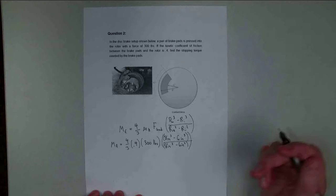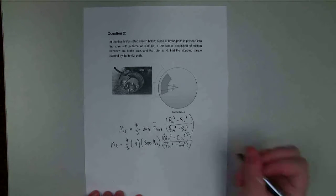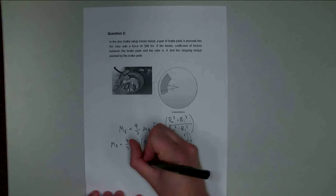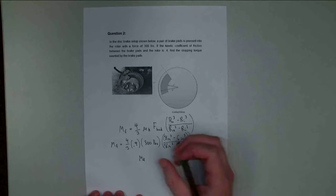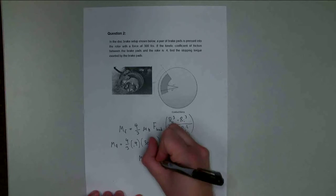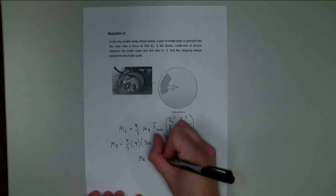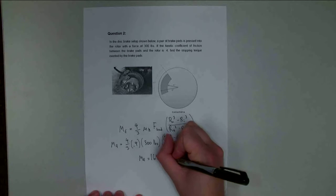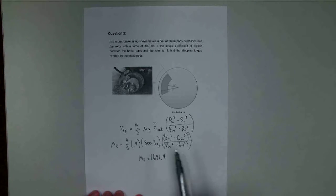If I do all of the math and plug in my numbers, I should get a moment due to friction that is equal to 1,691.4. My units are going to be inch-pounds.